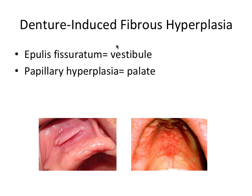Denture-induced fibrous hyperplasia refers to two main denture lesions caused by a poorly fitting denture. The first is epulis fissuratum, which occurs at the base of the vestibule. If you have an overextended flange of a denture constantly irritating that mucosa, the body can form a callous fibrous mass there. The second is papillary hyperplasia, caused by a poorly cleaned or poorly fitting denture. It looks very different because it occurs on the palate instead of the vestibule.